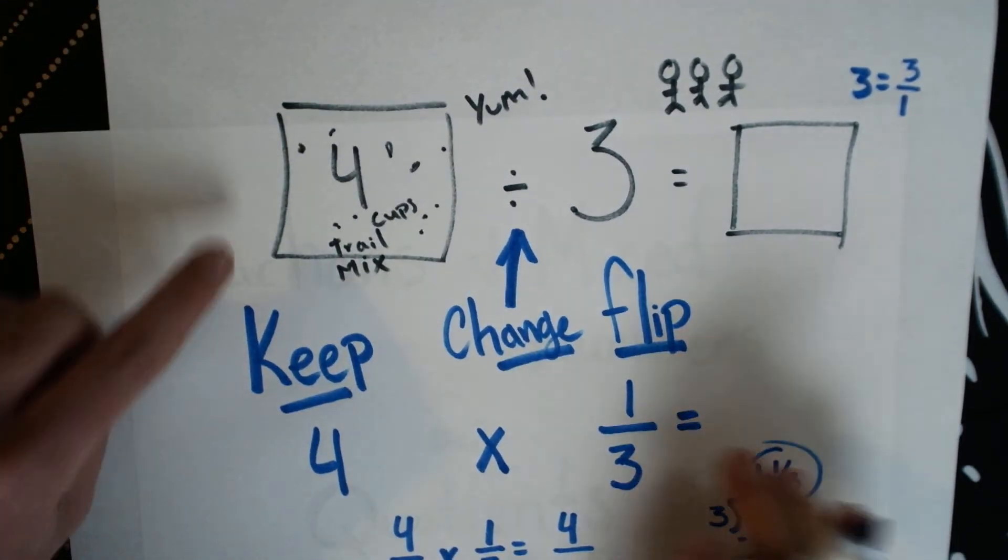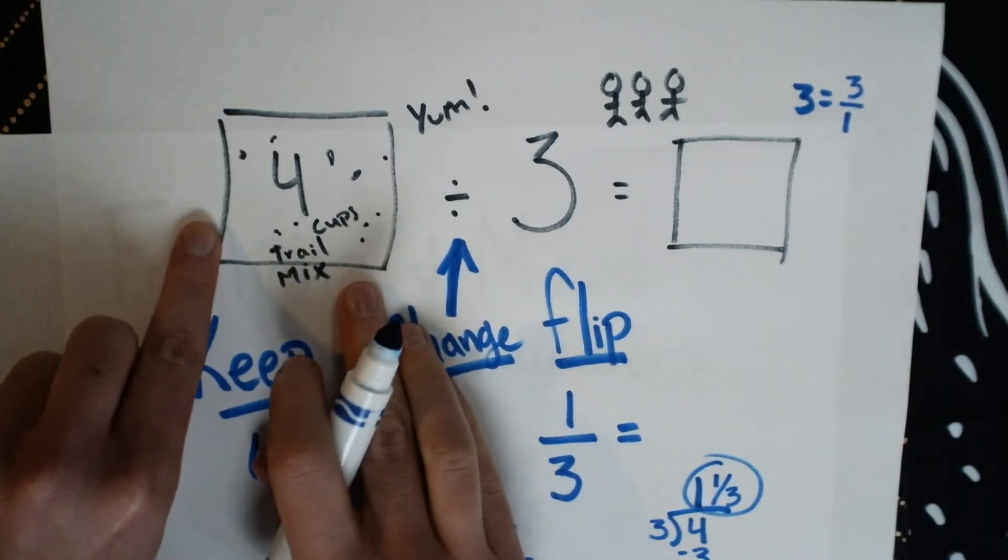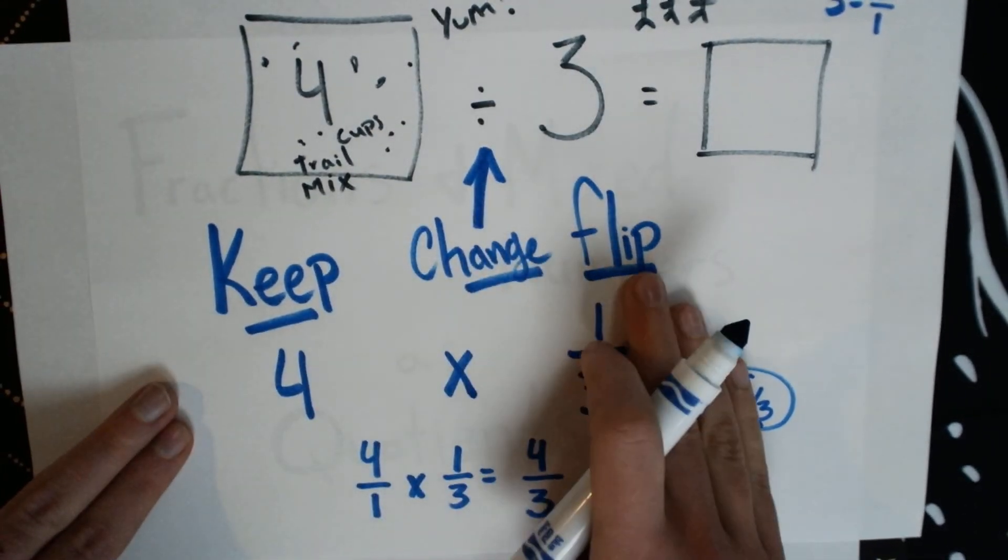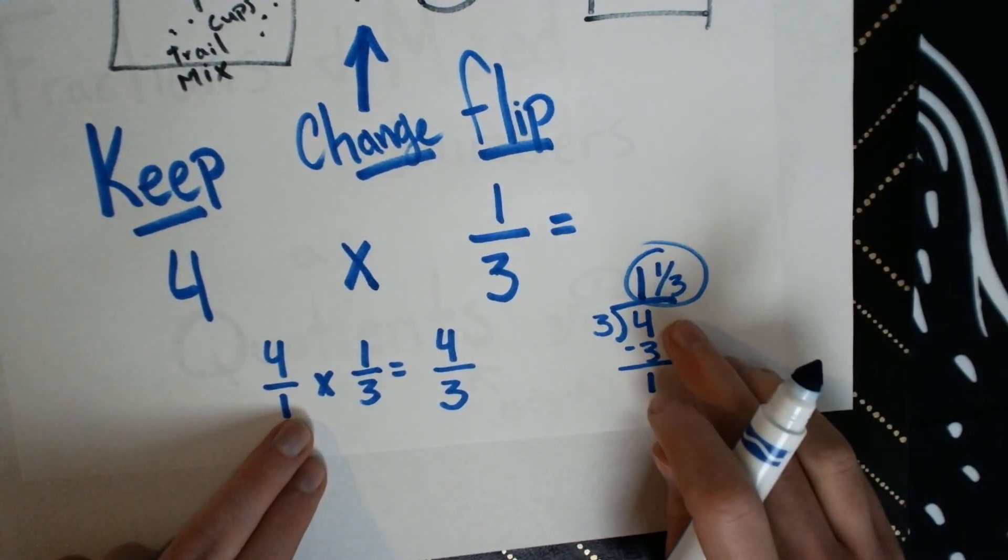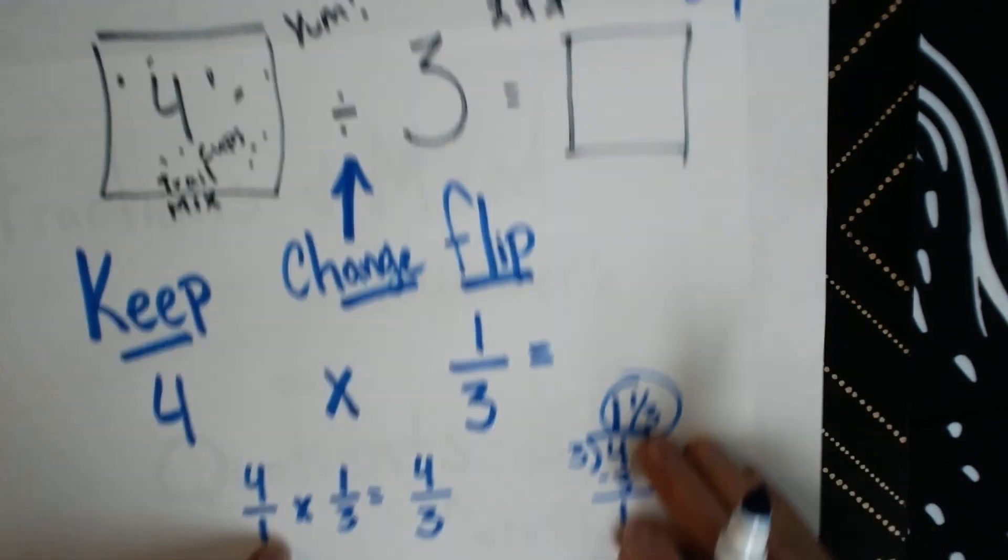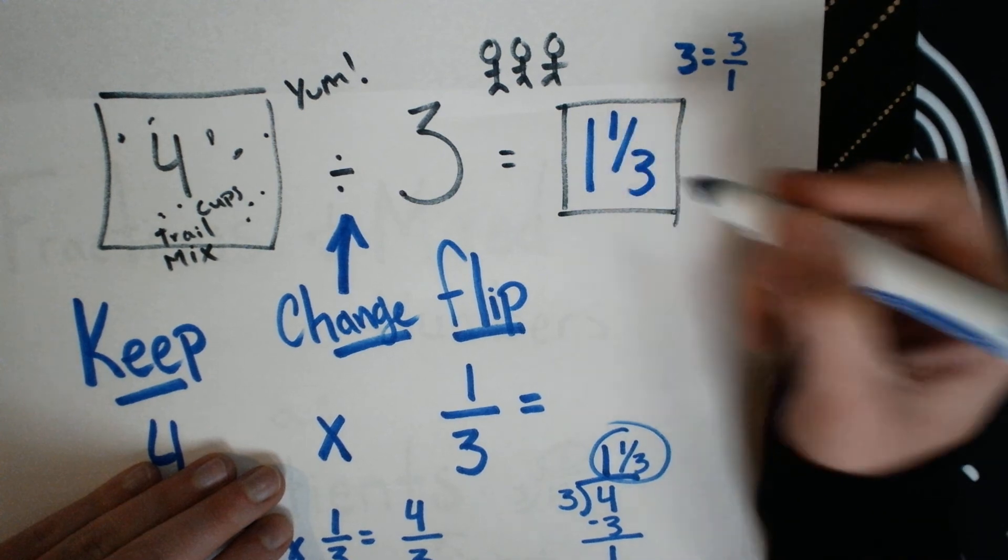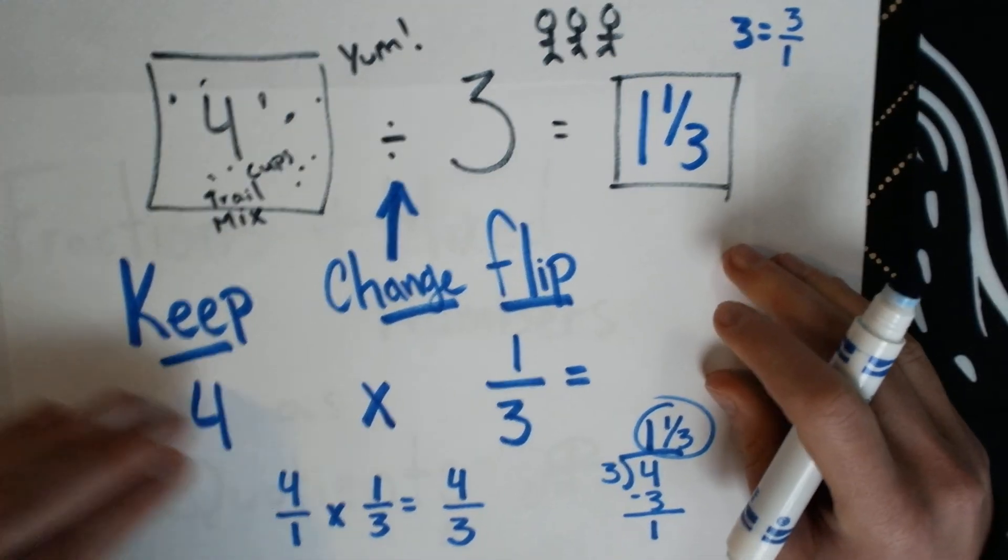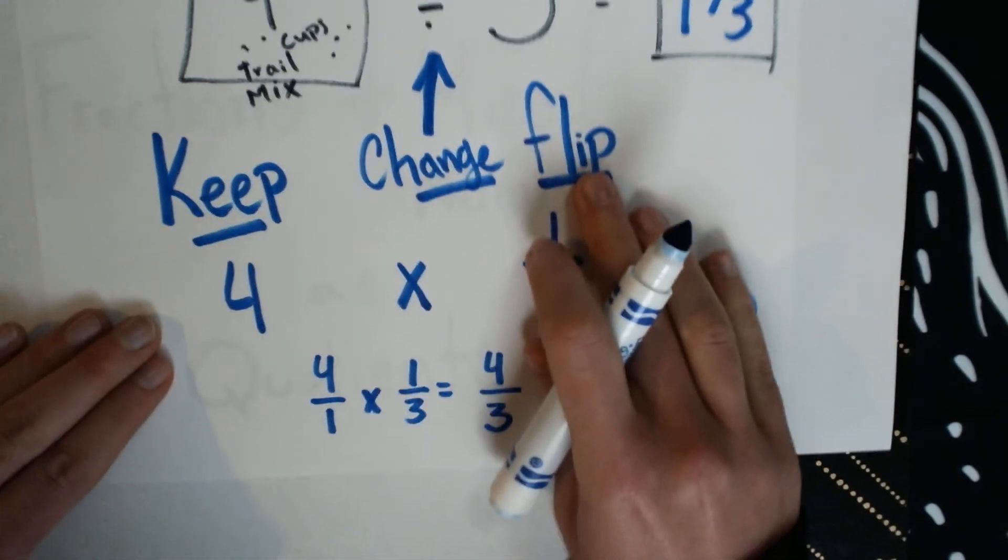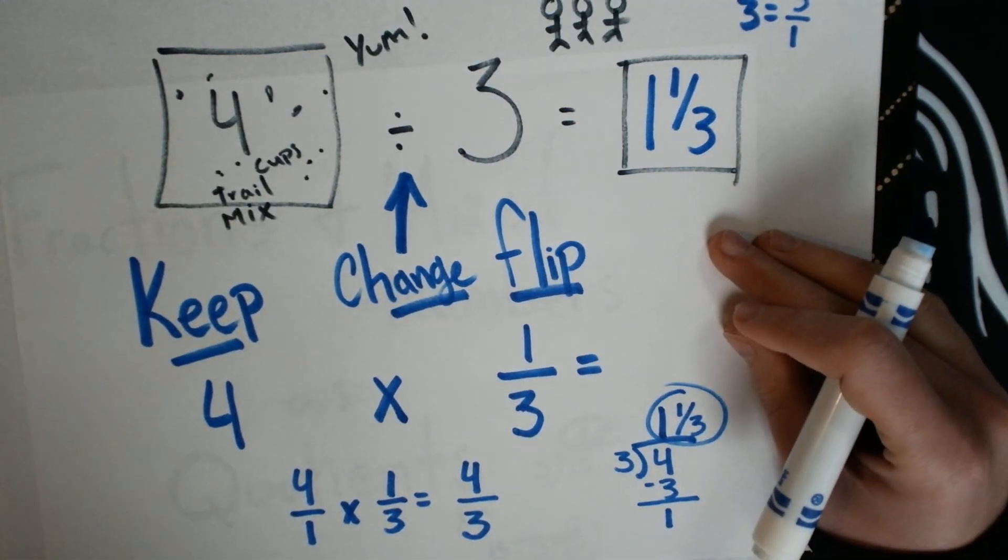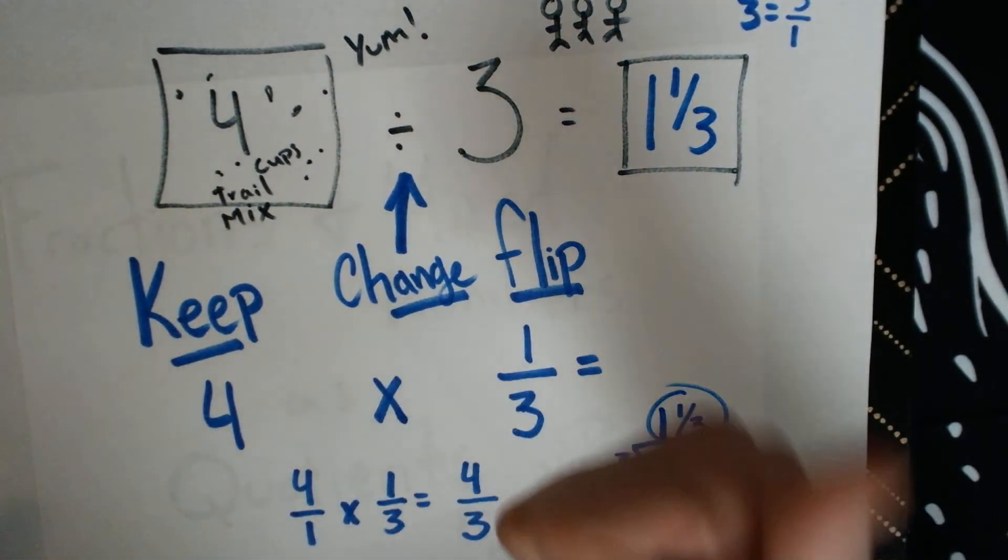So if we have four cups of trail mix and we're going to share it between three people, we can see by using the keep change flip method that you each get one and one-third cups of trail mix. You can choose to use the keep change flip model that I talked about down here or you can use the visual model in the envisions lesson. Great job!